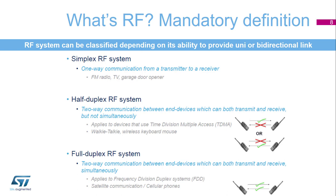The third is the full-duplex RF system. It is communication between end devices which can both transmit and receive simultaneously. It applies to frequency-division-duplex systems, for example cellular phones.